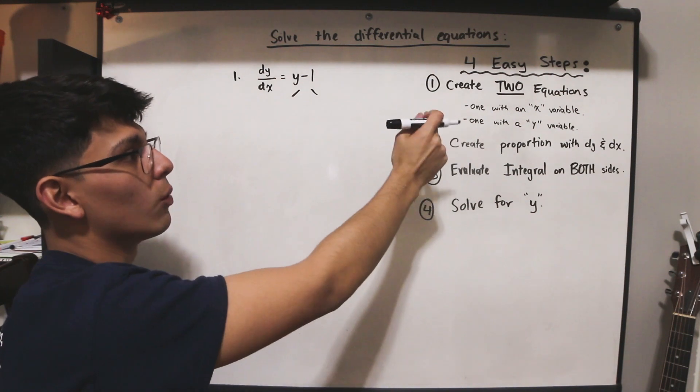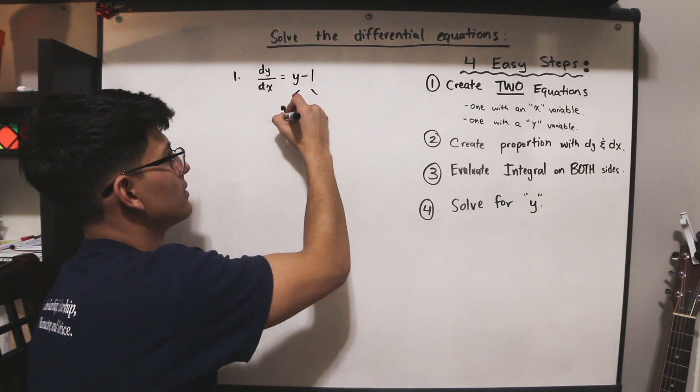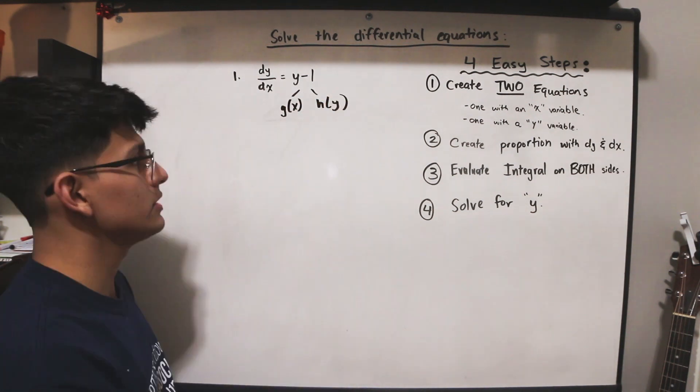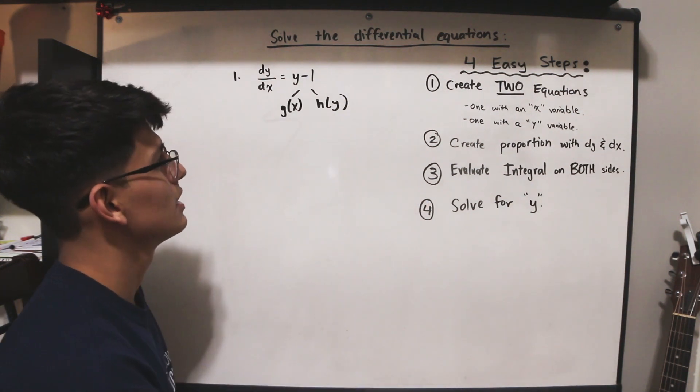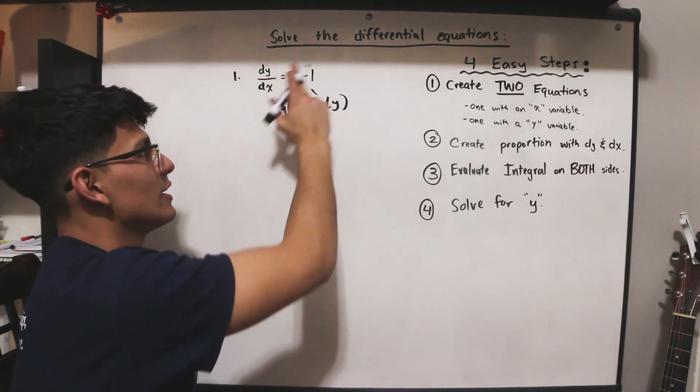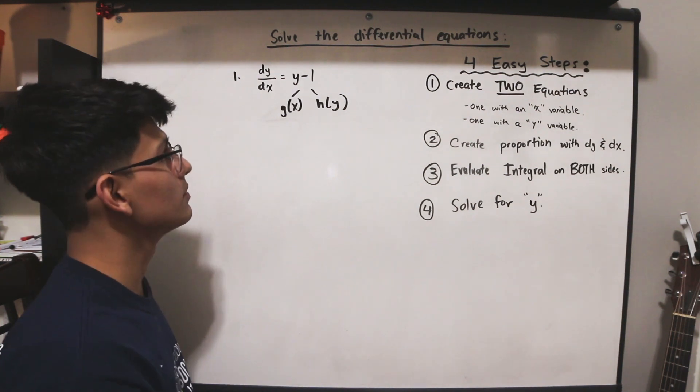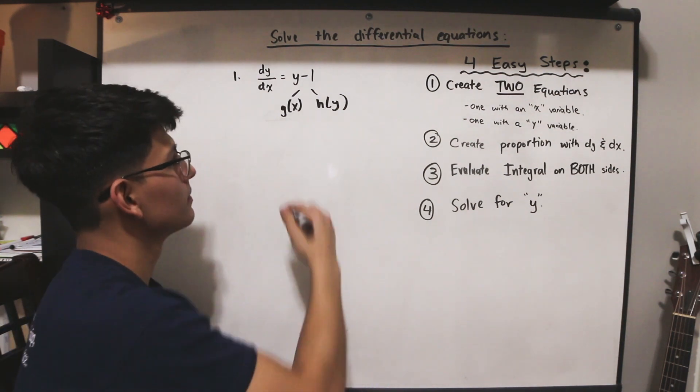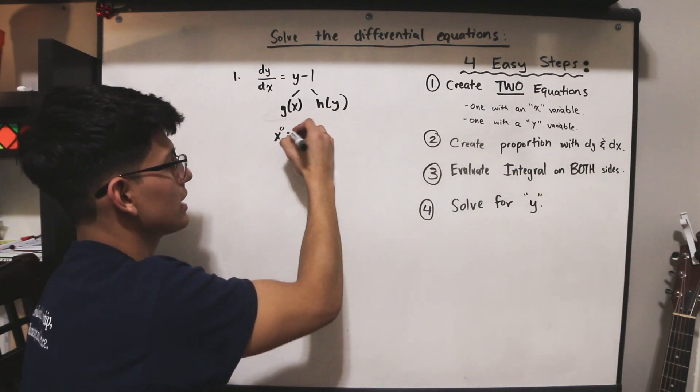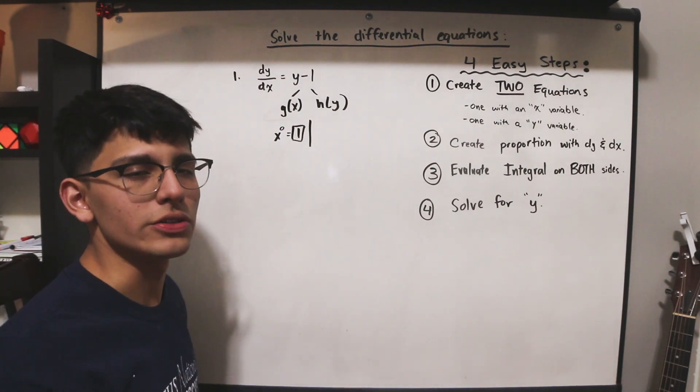What I mean when I say one with an x variable and one with a y variable is that we should have two equations, g of x and h of y. These two variables are going to help us later on in the steps so that we can solve this differential equation. In this case, are there any x's in this part of the equation? Well, no, there aren't any x's and that's okay because we can just simply write x to the 0 and we know x to the 0 to be 1. So that's going to be our x equation.